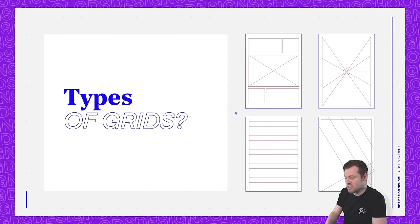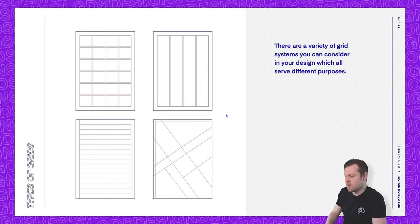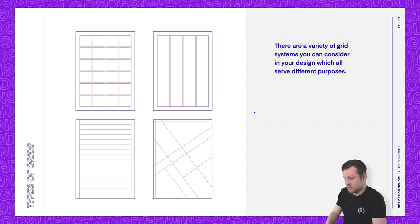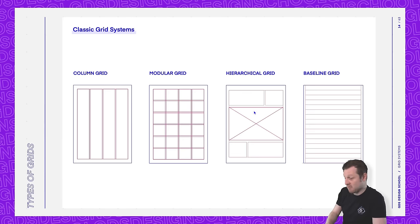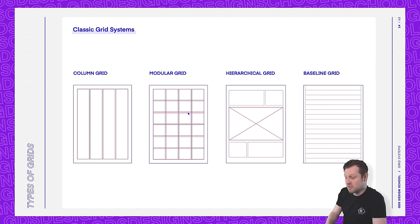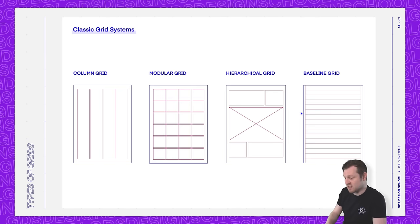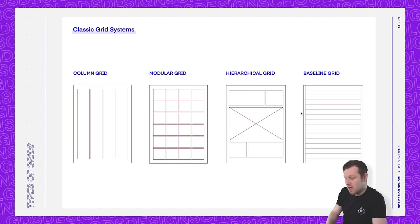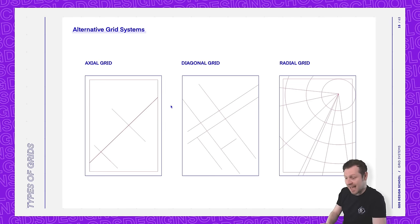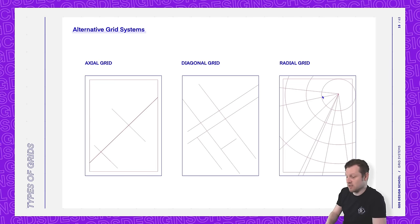There are a variety of grid systems you can consider in your design, which all serve different purposes. Some of the classic grids commonly used in design are column grids, modular grids, hierarchal grids, and baseline grids. However, there are some alternative grids one can consider, such as axial grids, diagonal grids, and radial grids.